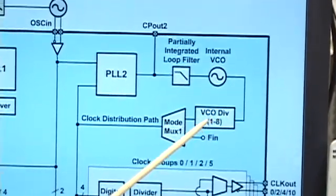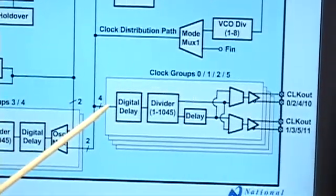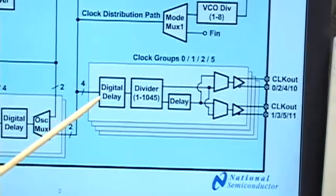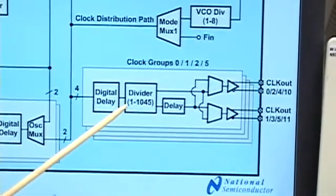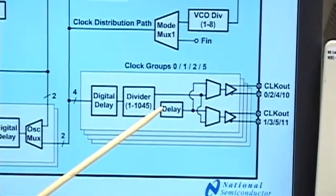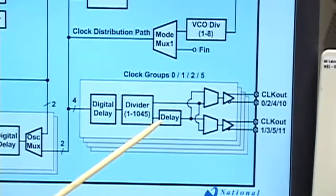That VCO drives a clock distribution path leading to these clock distribution groups that are composed of the digital delay block, deep dividers which provide a wide range of output frequencies, and the fine analog delay for fine skew adjustment.